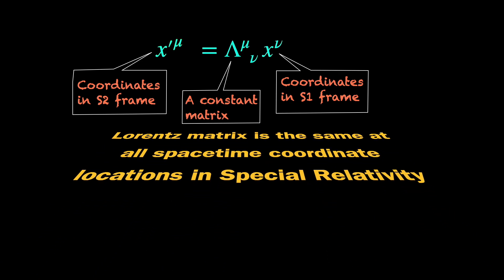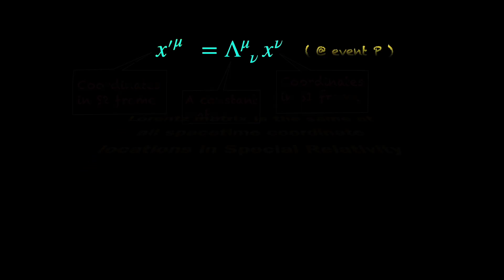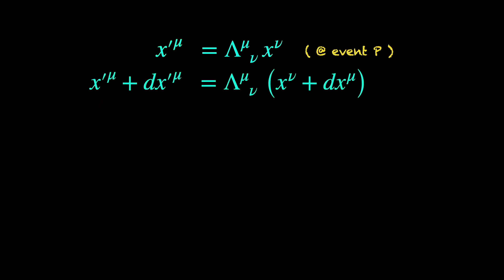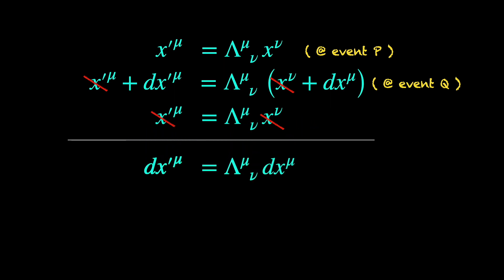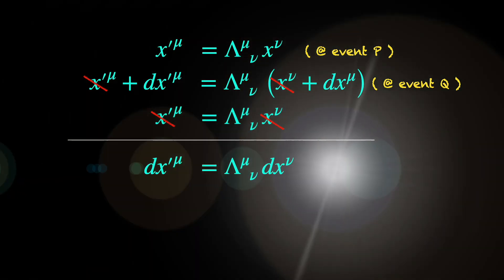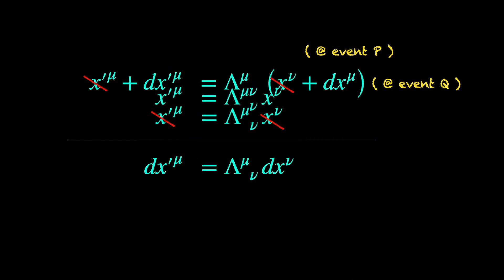So, we can write the Lorentz transformation equations once for the event P and also for the event Q and then take the difference. This could have been a lot of work if we were to work with separate equations for each component like CT, X, Y, Z, etc. But thankfully, we can use the matrix equation and do it in one go. From the results, we can readily see that the coordinate differentials in S1 and S2 relate to each other just like the space-time coordinates themselves did. They are obviously 4 component objects.